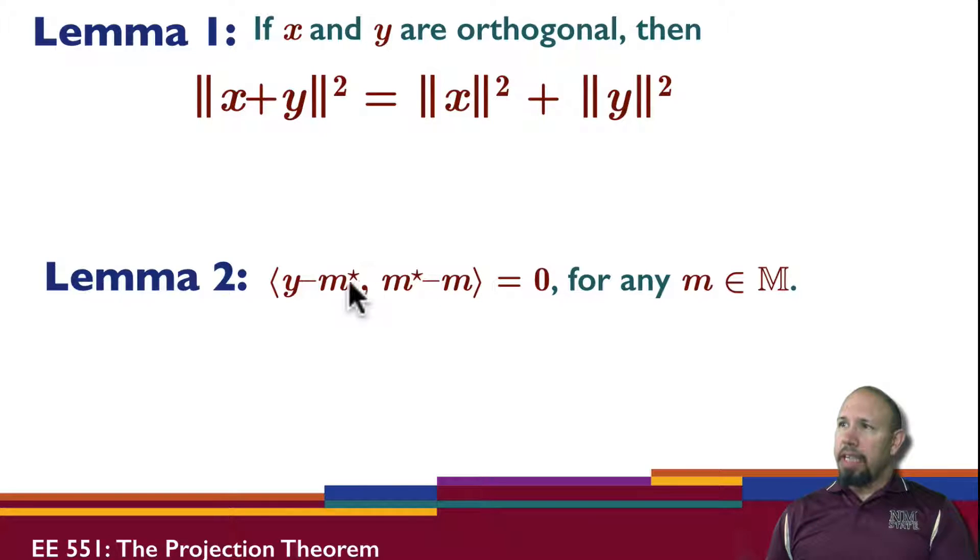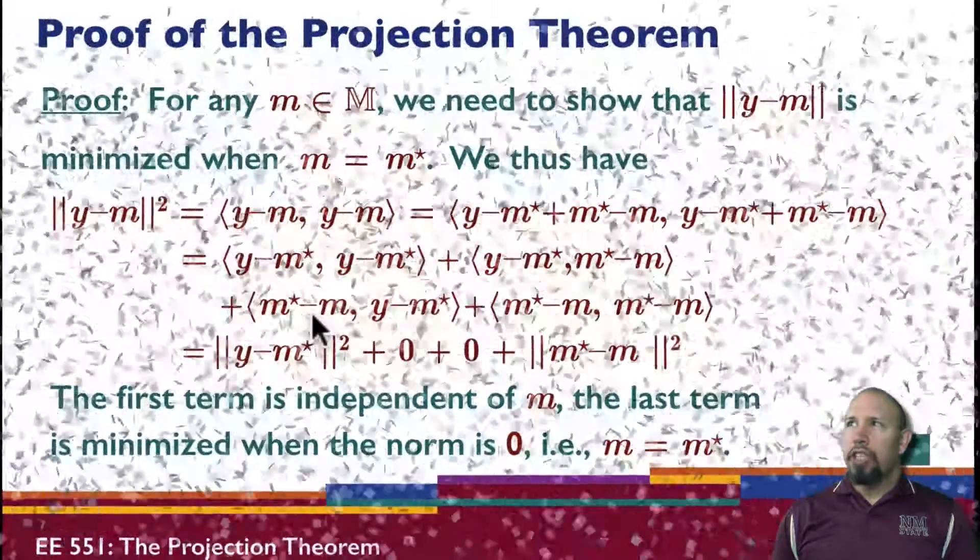That is, y minus m star, inner product m star minus m is equal to zero. So we're going to use these two in the proof of the projection theorem.